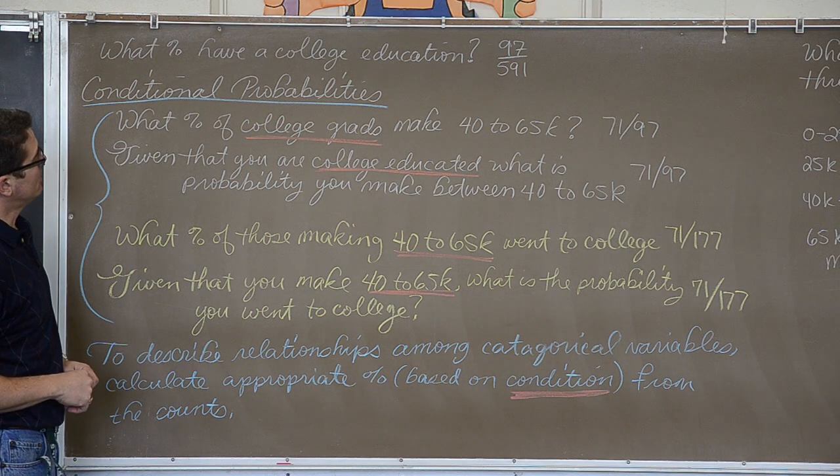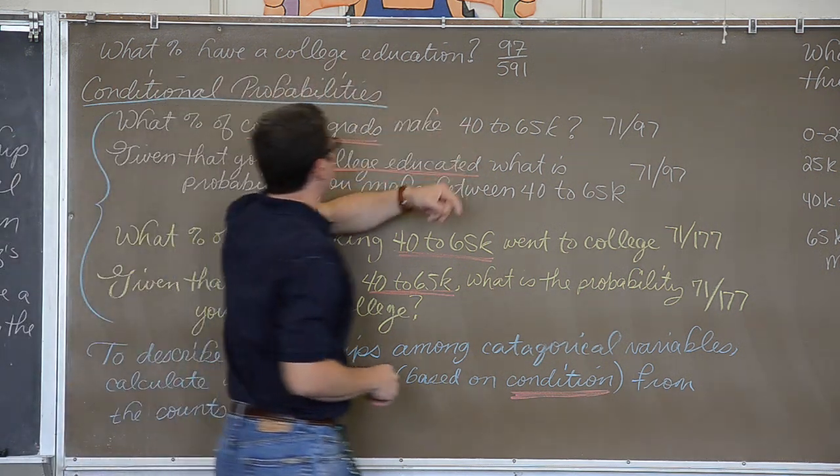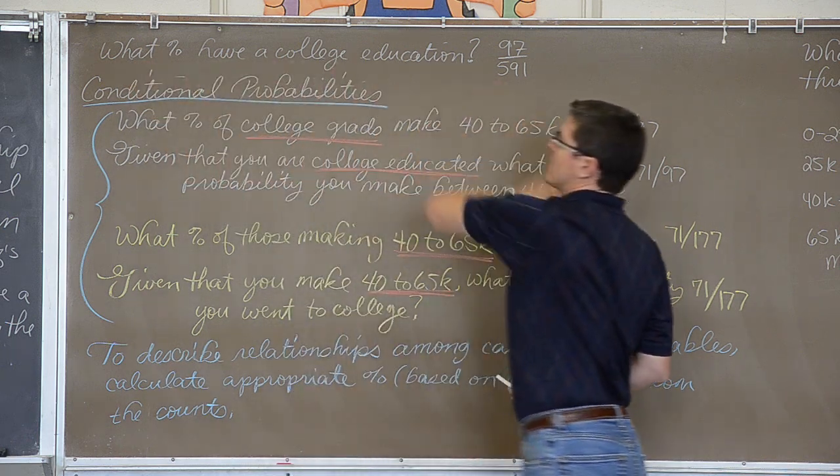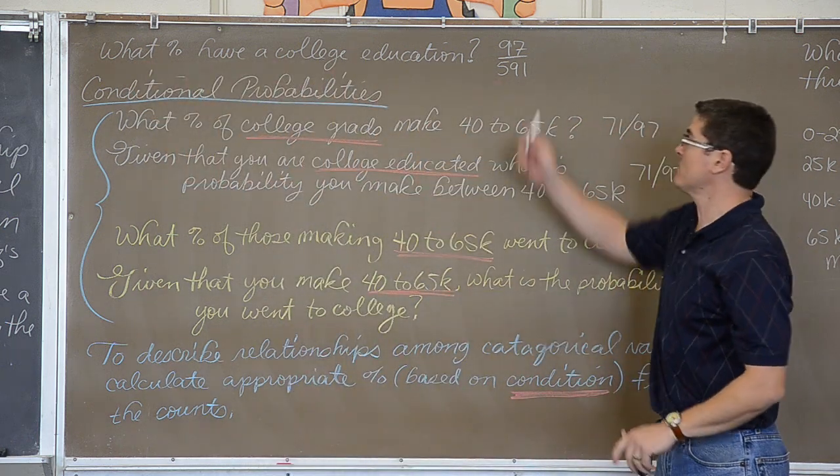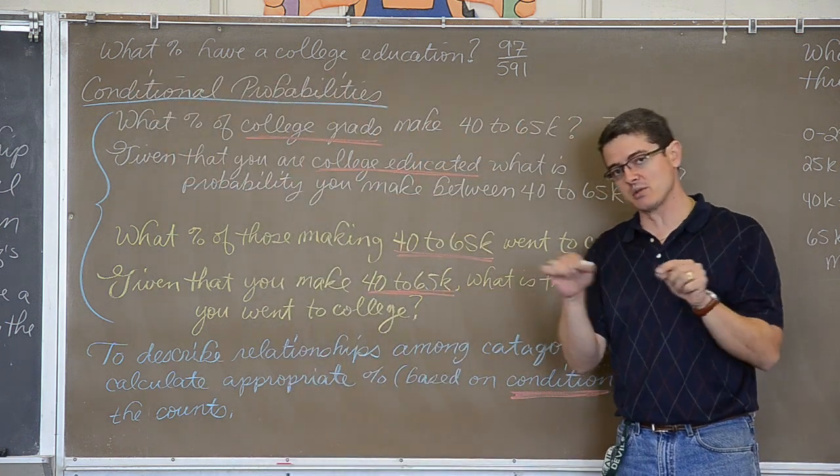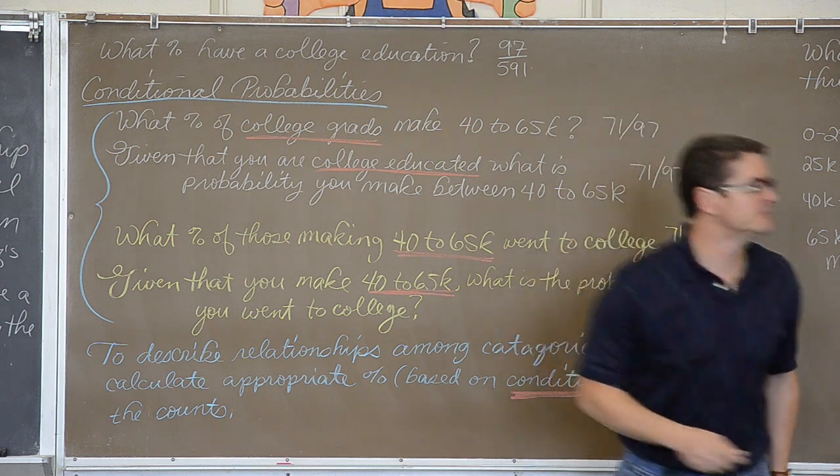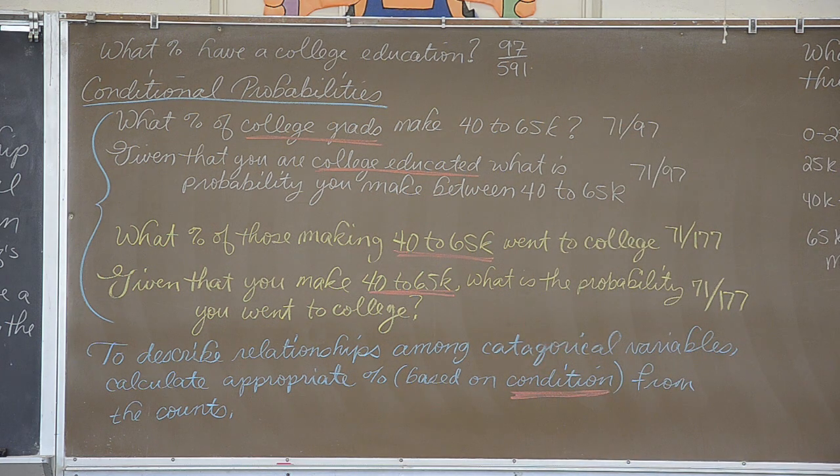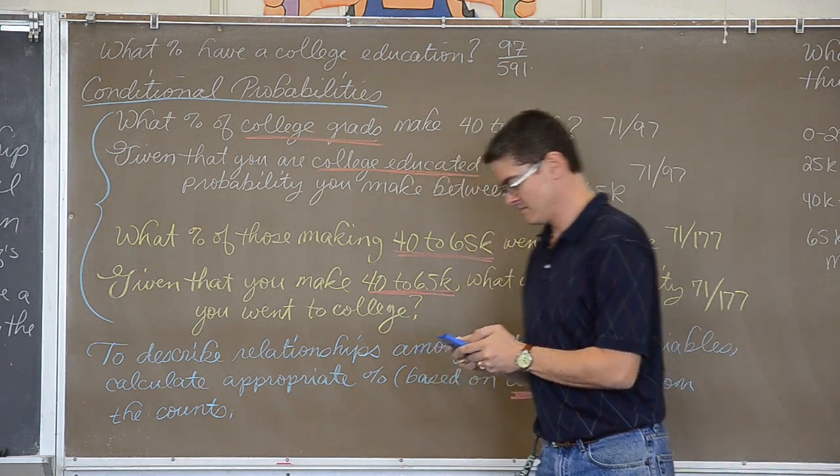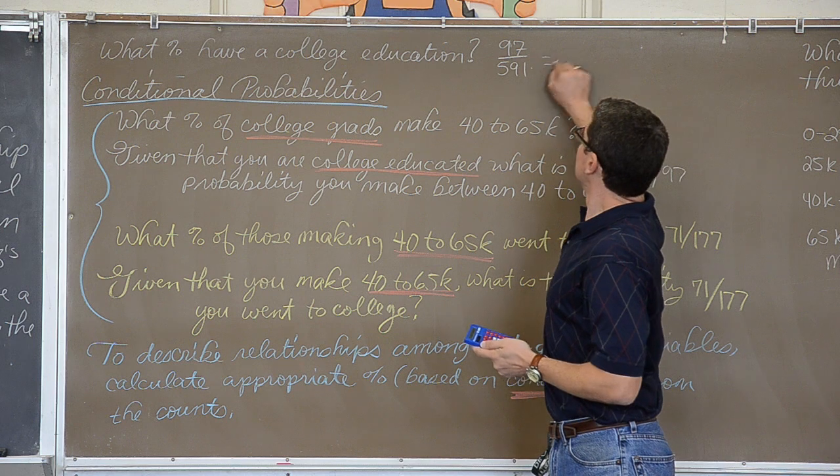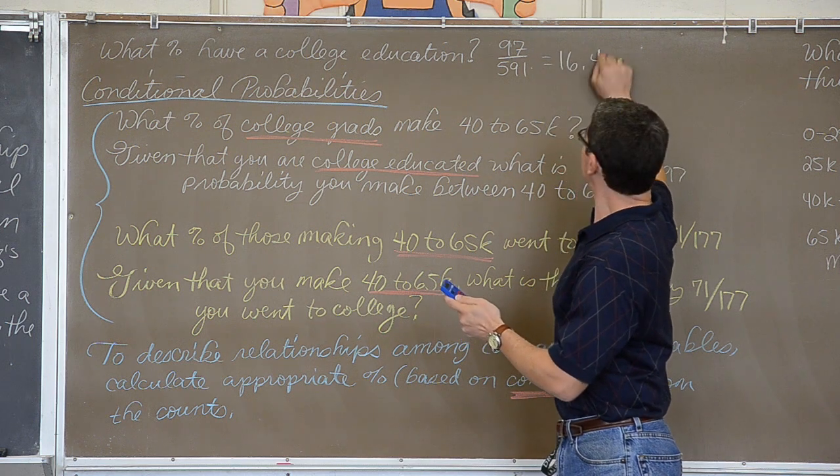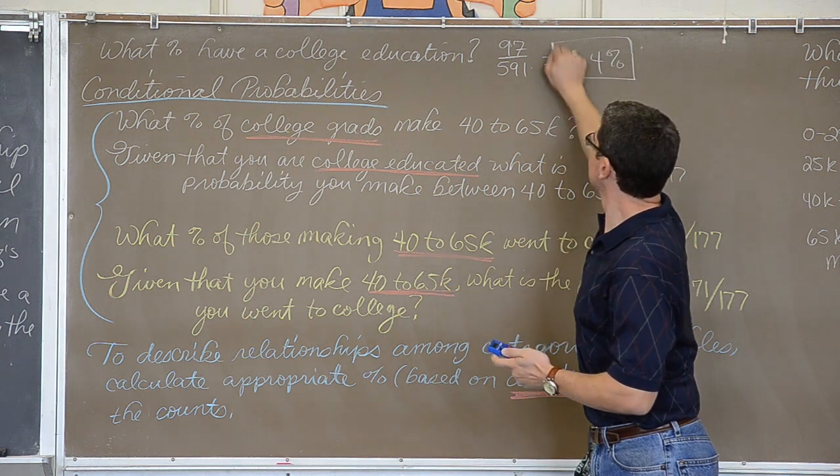So we have the question of simply out of all the people I looked at, what percent have a college education. Well that turned out to be a margin percent. Those are the totals at the bottom. And it was 97 out of 591, which is going to be 16.4%.